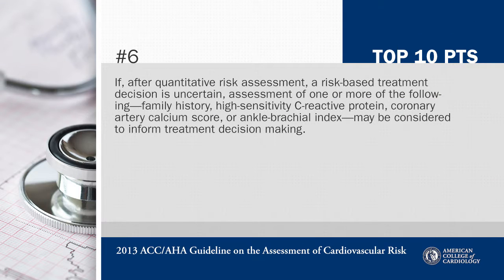Point six: if after quantitative risk assessment a risk-based treatment decision is uncertain, assessment of one or more of the following could be added — family history, high-sensitivity CRP, calcium scoring, and ankle brachial index. These added risk markers could be considered to inform treatment decision making.